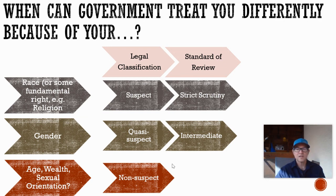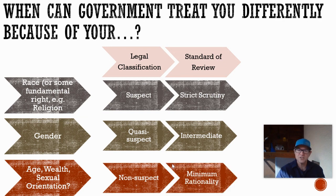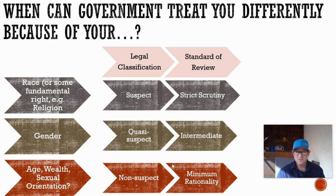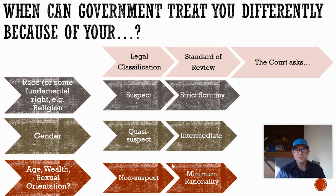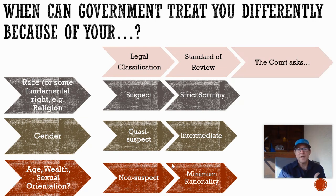For non-suspect classifications, the standard of review is the minimum rationality test — the government just needs a logical reason to treat you differently, and the discrimination is legal. The history of civil rights movements is really a movement to get your group's legal classification elevated to suspect, making it more difficult for government to treat you differently based on your membership in that group.